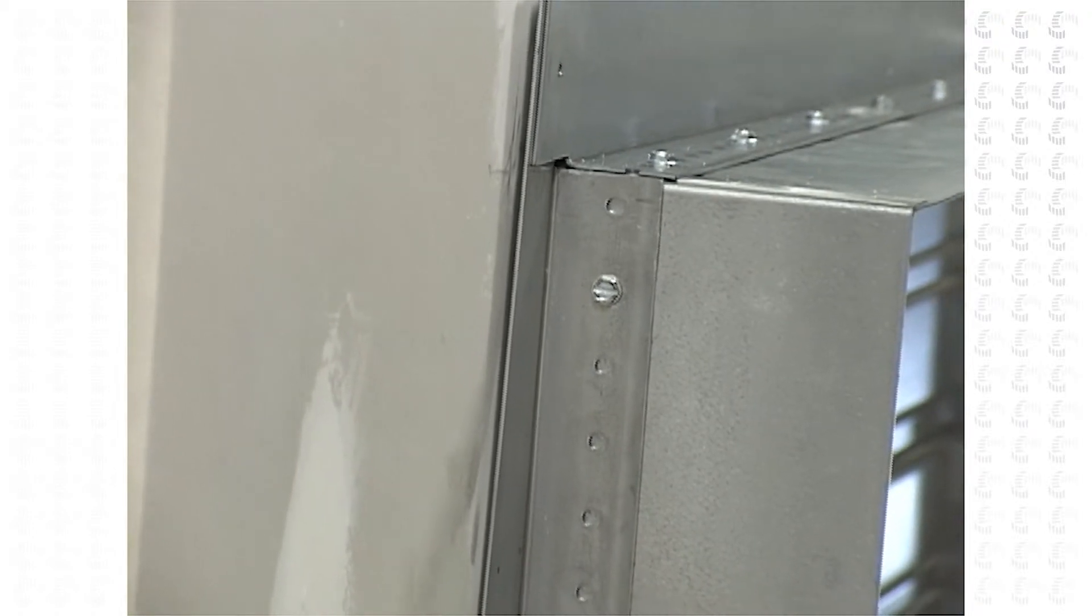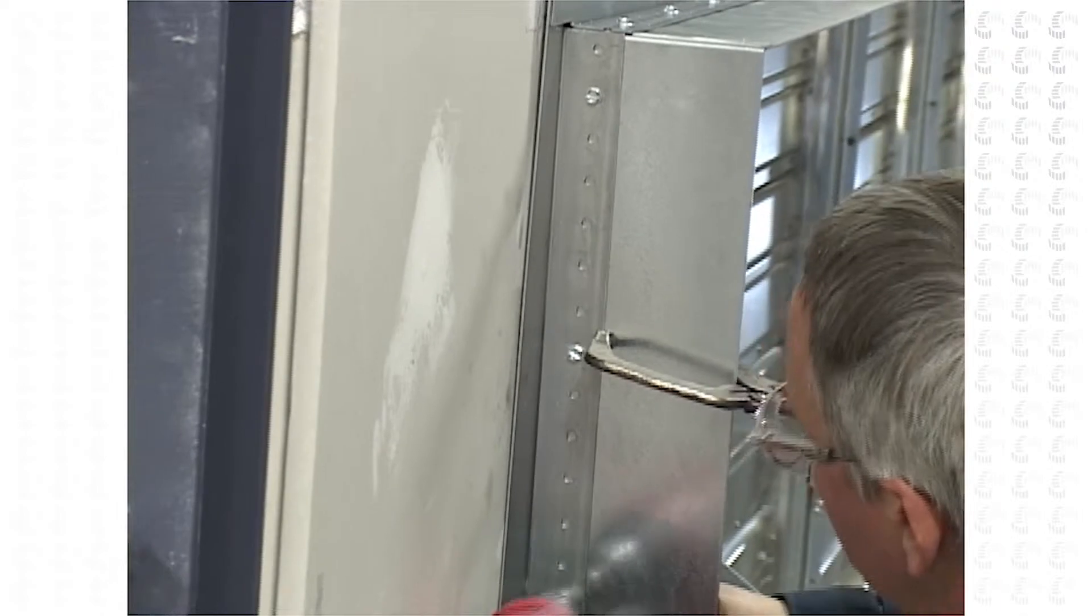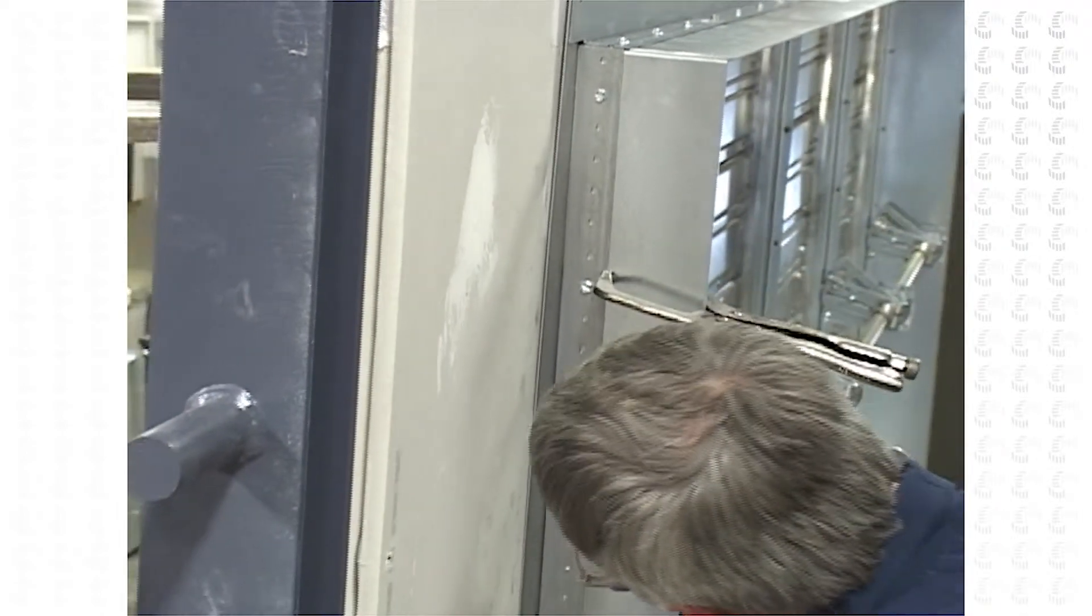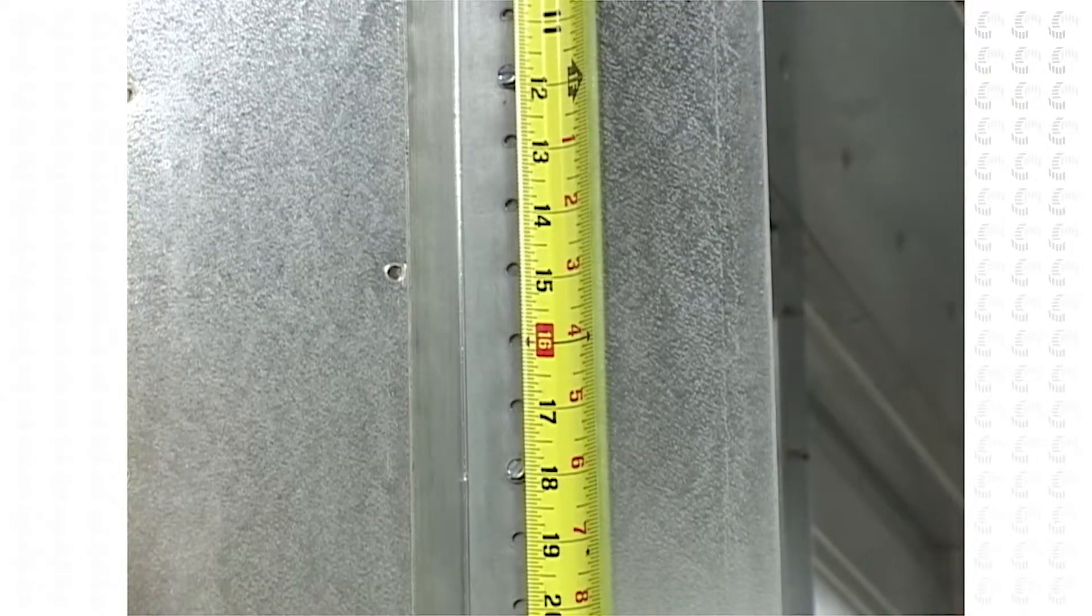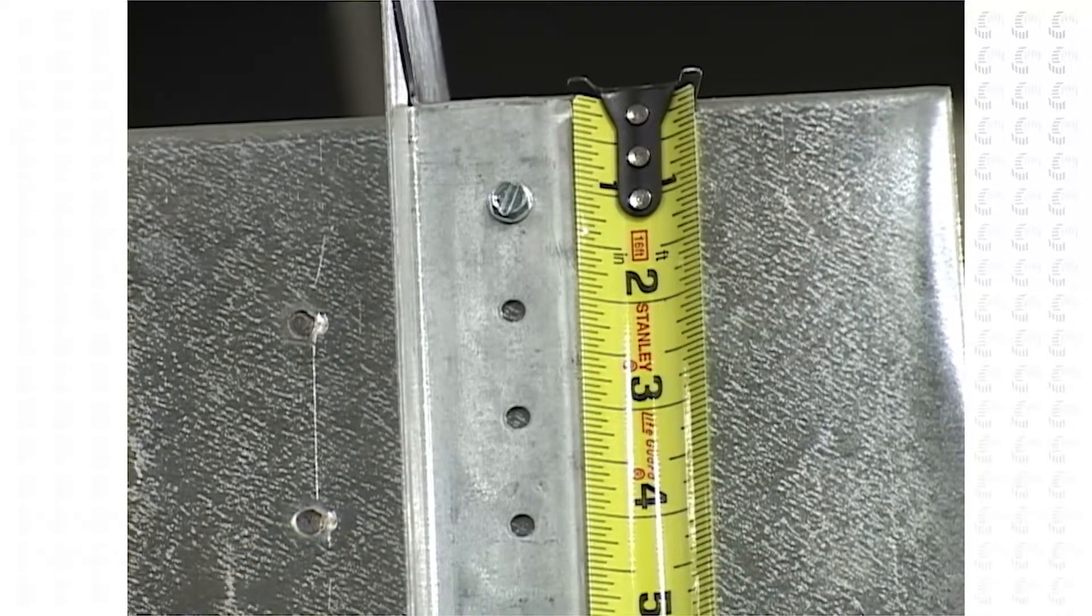Retaining angles must be attached to all four sides of the damper sleeve with a minimum of two connections per side. Fasteners should be spaced a maximum of 12 inches on center with the first fastener spaced a maximum of two inches from the corner of the sleeve.